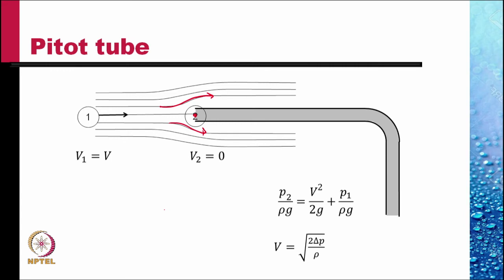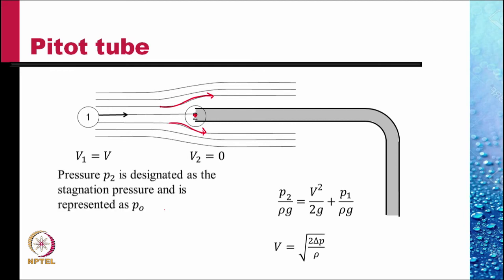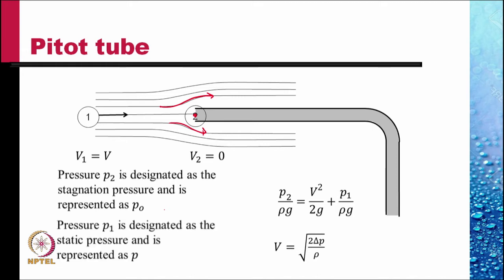This is a very simple method of measurement, very accurate and with wide applications. Pressure p₂ is designated as the stagnation pressure and represented by p₀. Pressure p₁ is designated as the static pressure and represented as p in most applications.